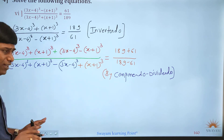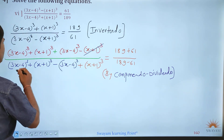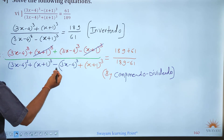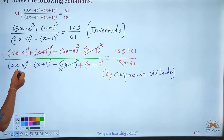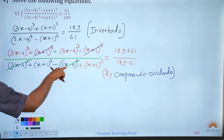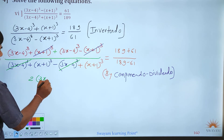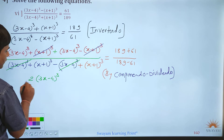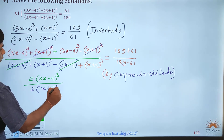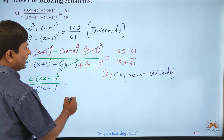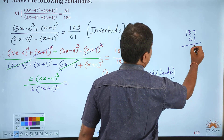After cancellation: the (x+1)³ terms cancel on top, and the (3x−4)³ terms cancel on the bottom because there's a minus and a plus. What remains is 2(3x−4)³ divided by 2(x+1)³ is equal to (189+61) divided by (189−61), which is 250 divided by 148.